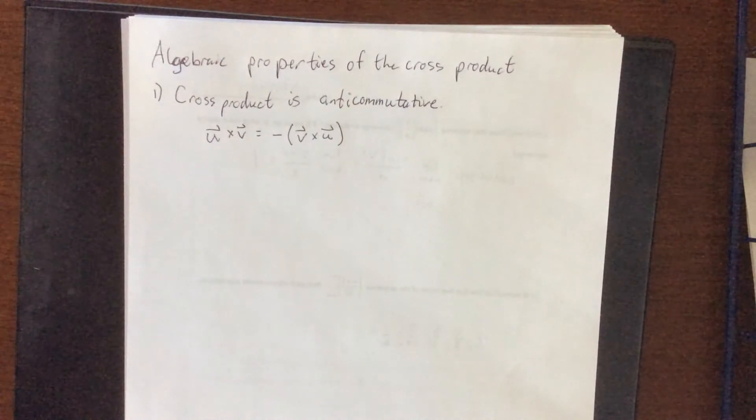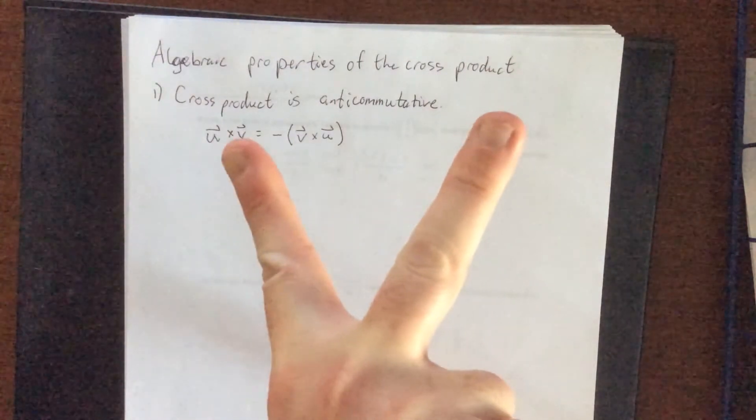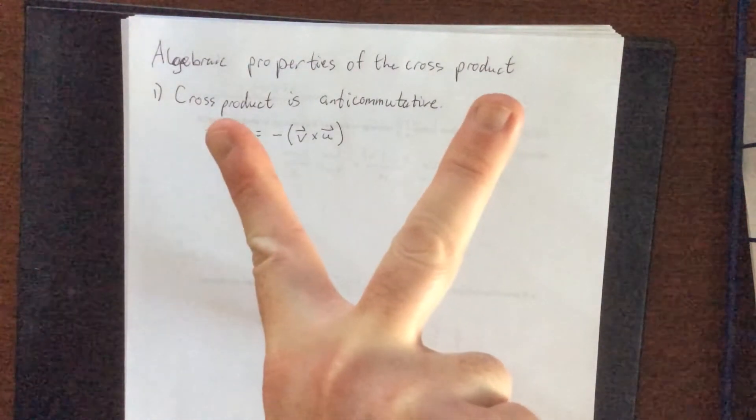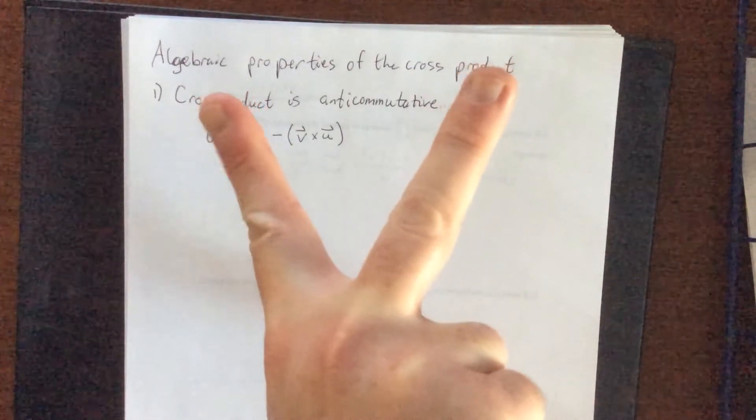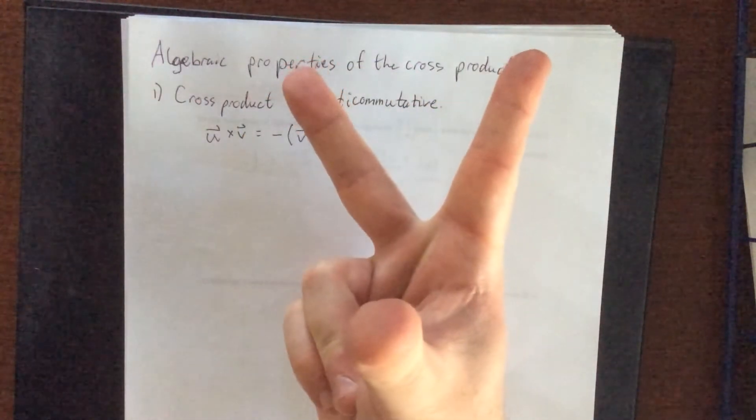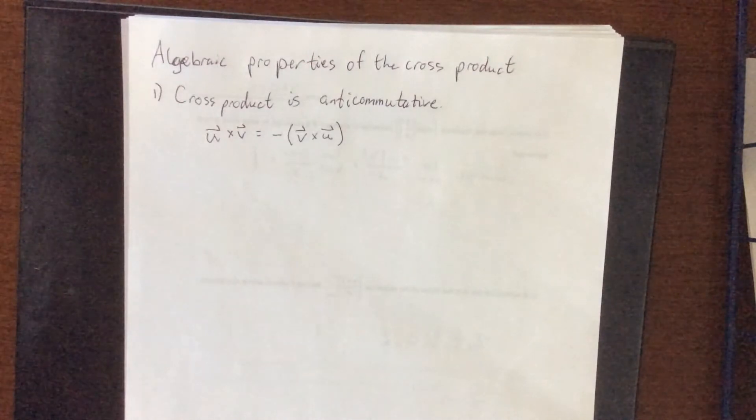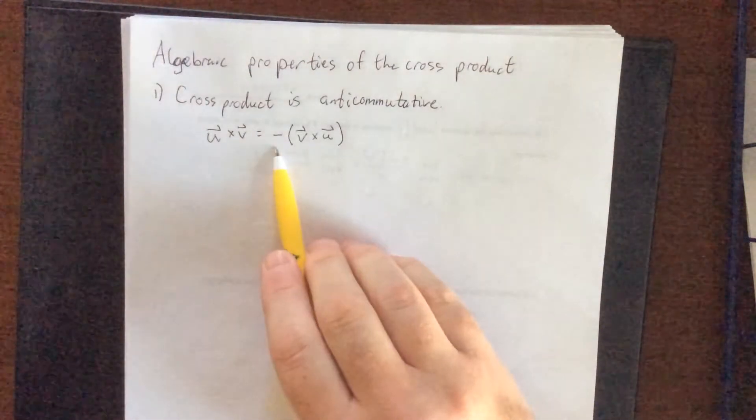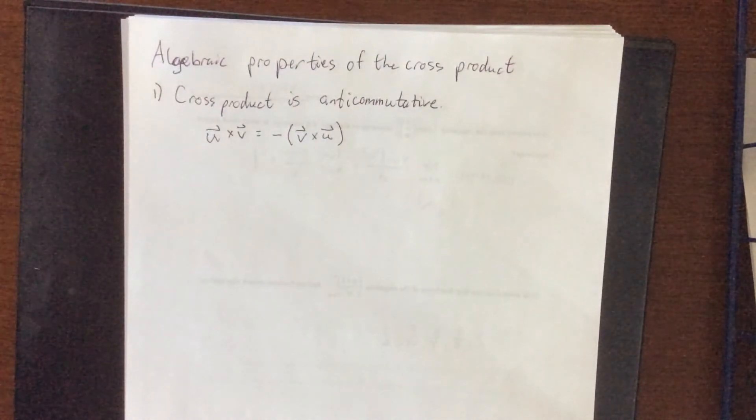The easiest explanation is that if you were to use the right-hand rule, you'll notice that with my fingers in this orientation, my thumb is pointing in the downward direction. Whereas if I were to flip those two vectors around, my thumb now points in the upward direction. If I'm simply reversing the direction of the resultant vector, then that's like multiplying by negative one. So that's what we mean when we say anti-commutative.